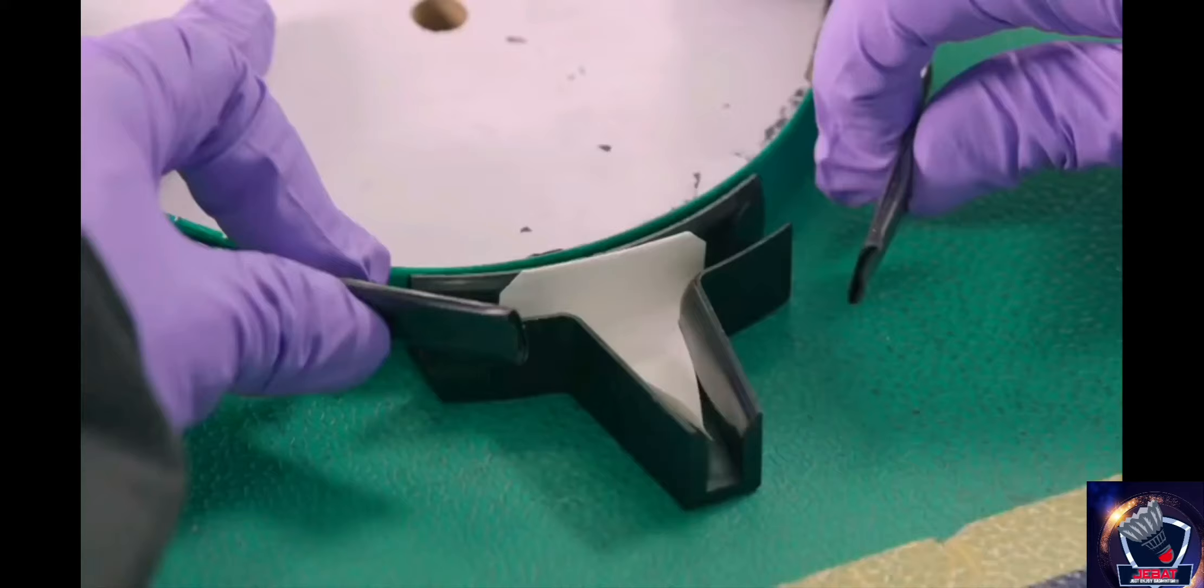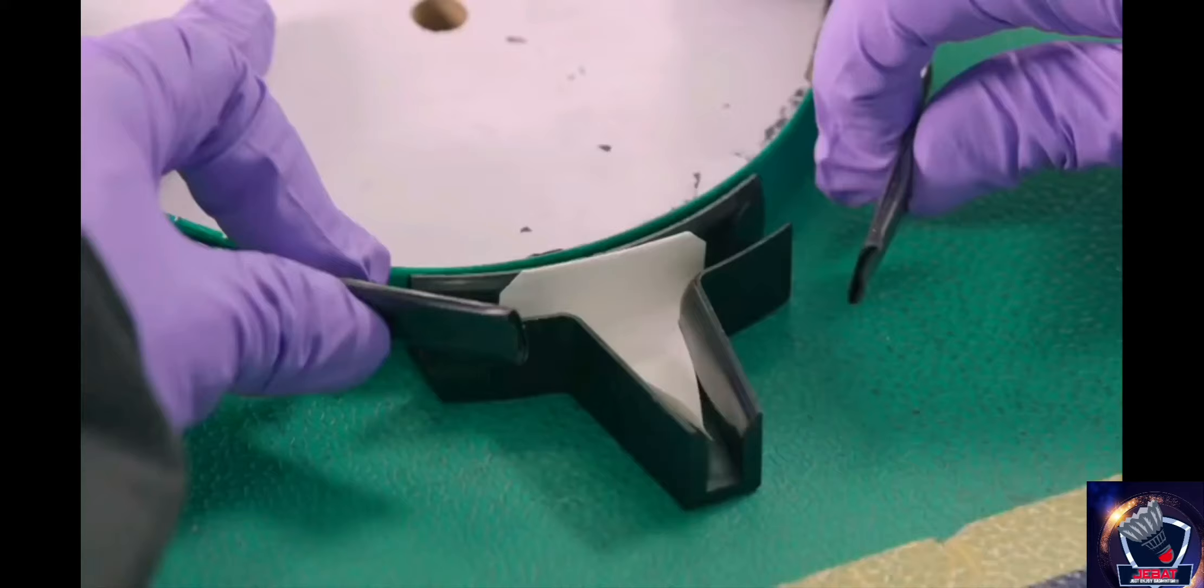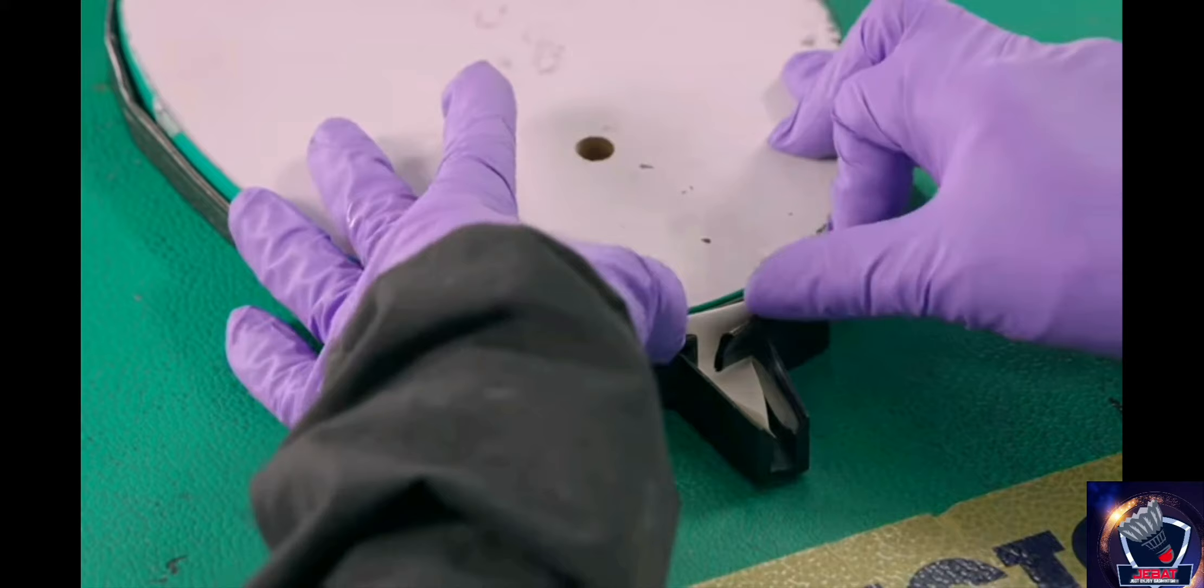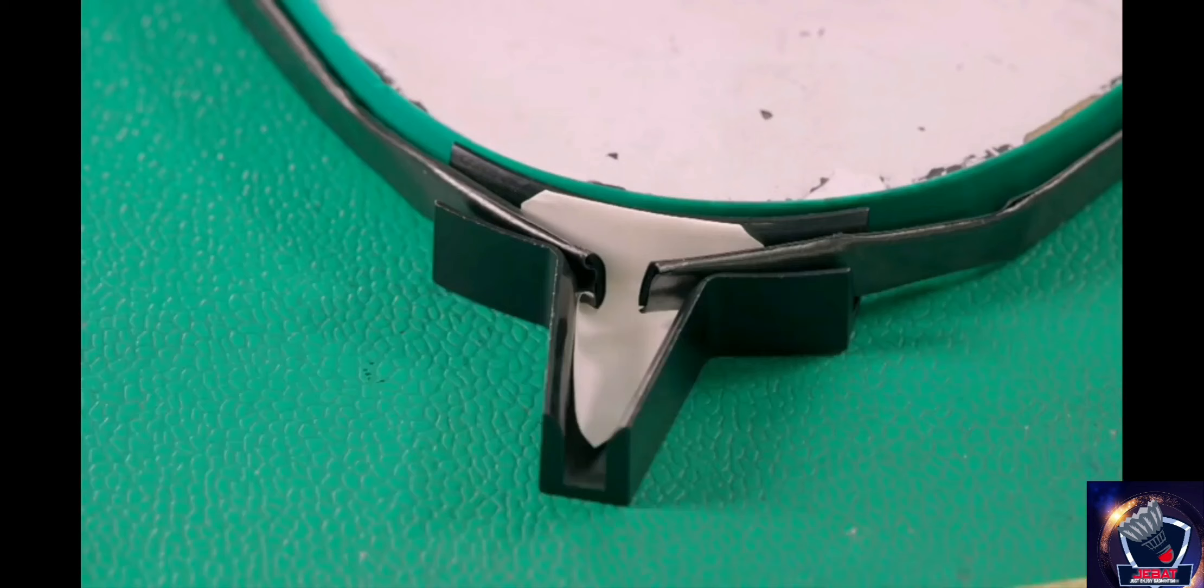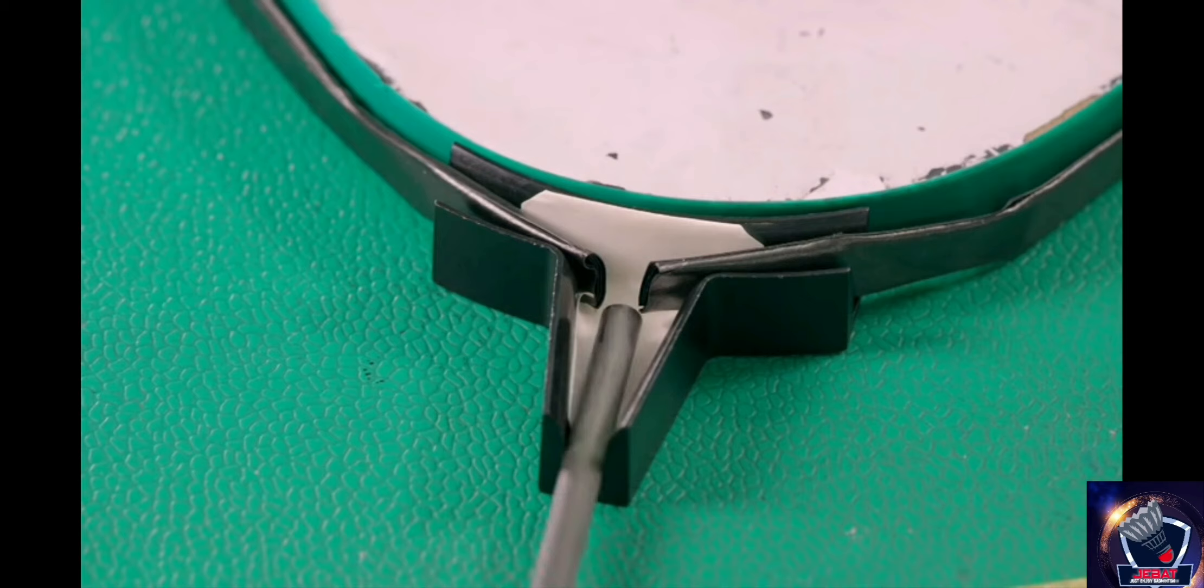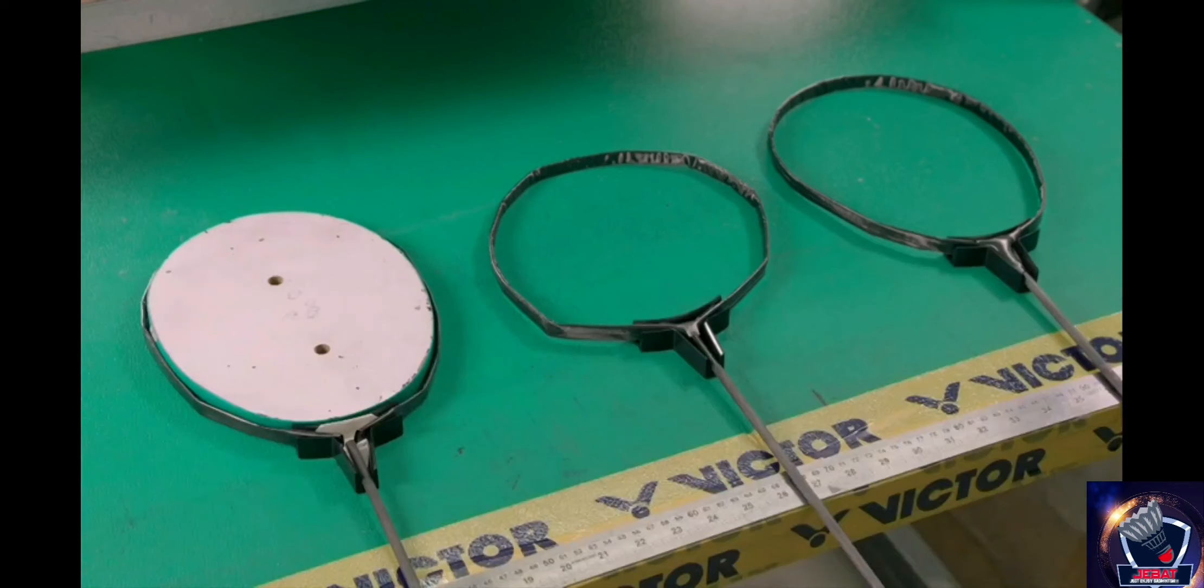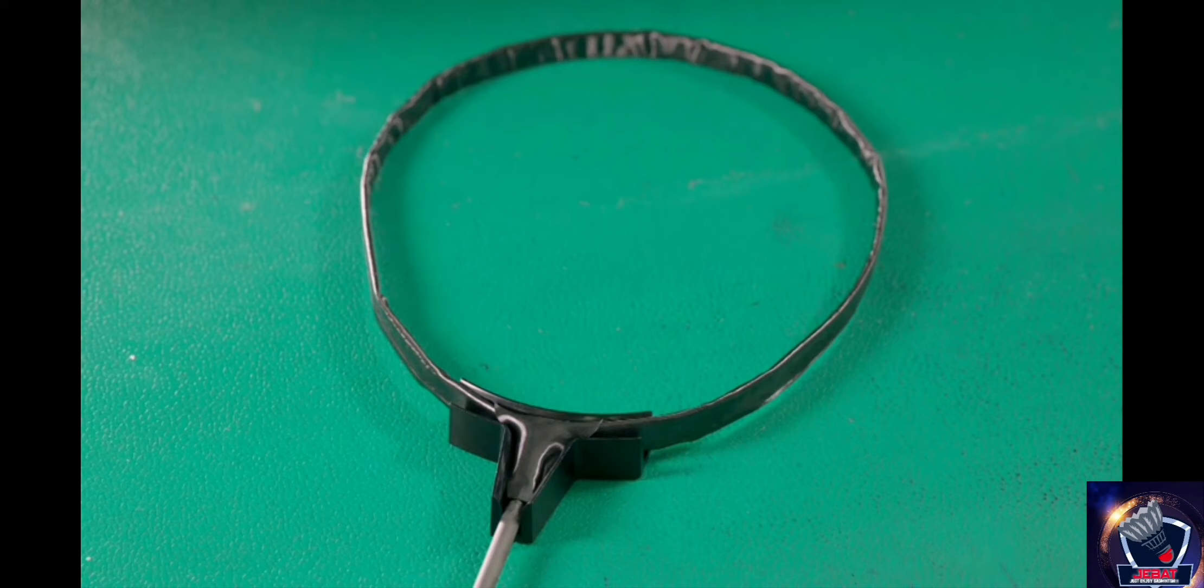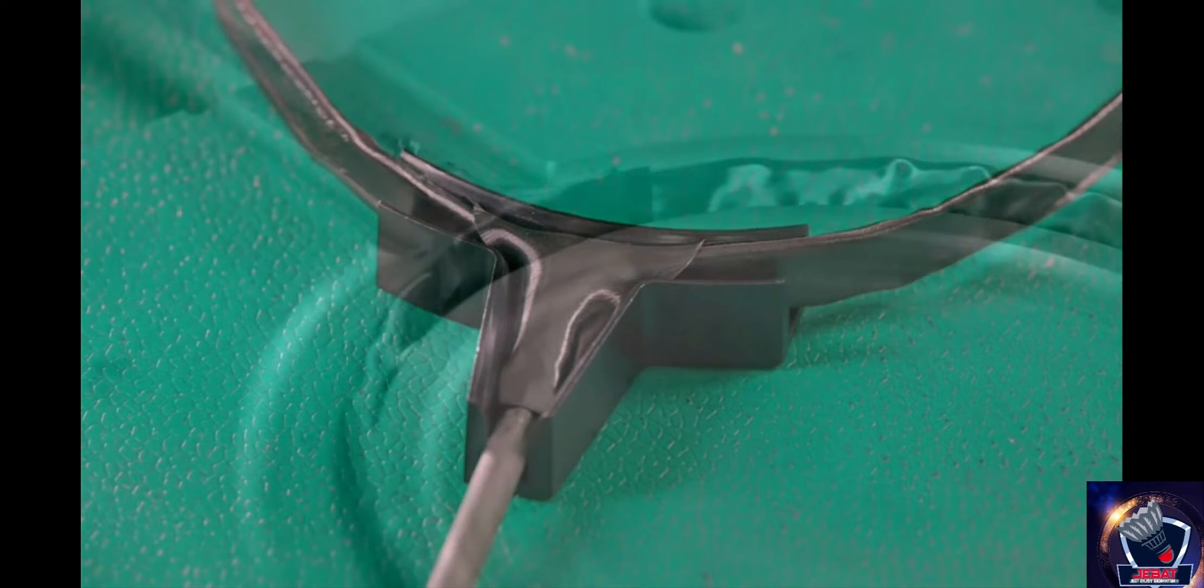In the next phase, a worker wraps the strip around a purpose-built mold to create the shape of a racket frame. She introduces the carbon fiber shaft into the mold. The racket is taking shape. Another piece of carbon fiber forms the joint between them.